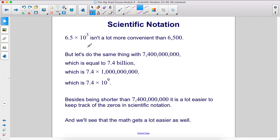6.5 times 10 to the 3rd isn't a lot more convenient than 6,500. But let's do the same thing with 7,400,000,000, which is equal to 7.4 billion, and billion is 1 with 9 zeros like that. So we can rewrite this as 7.4 times 10 to the 9th.